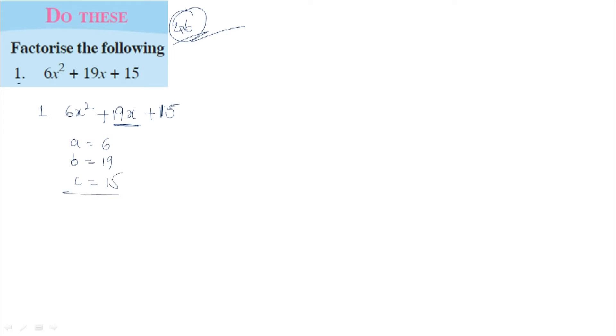We need to split the middle term into two terms. A equals 6, B equals 19, C equals 15. We'll find the AC product: 15 × 6 equals 90.